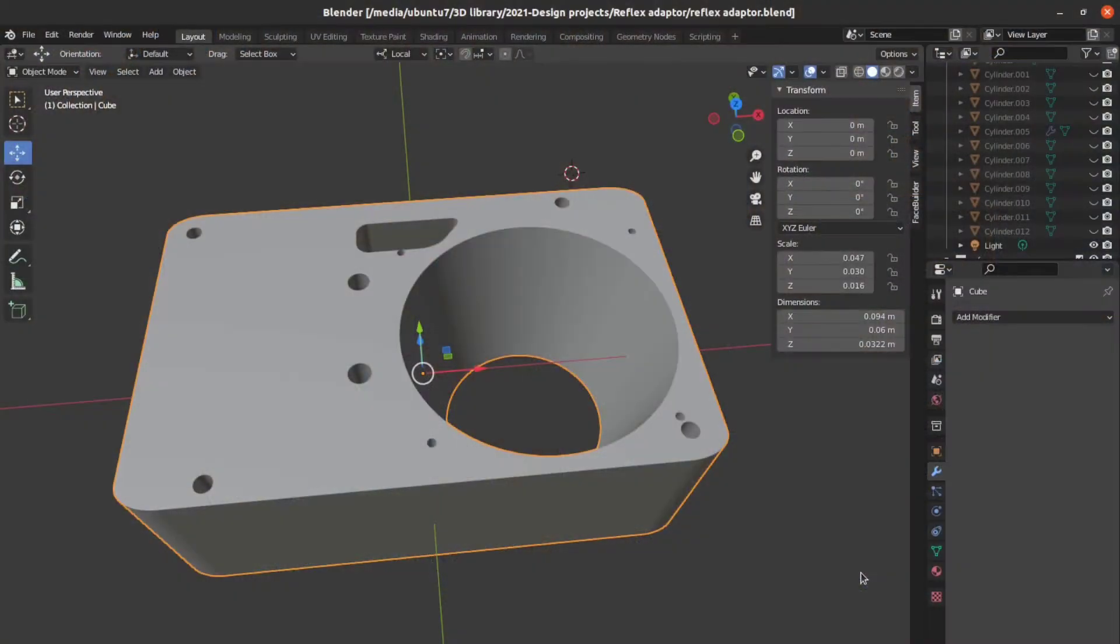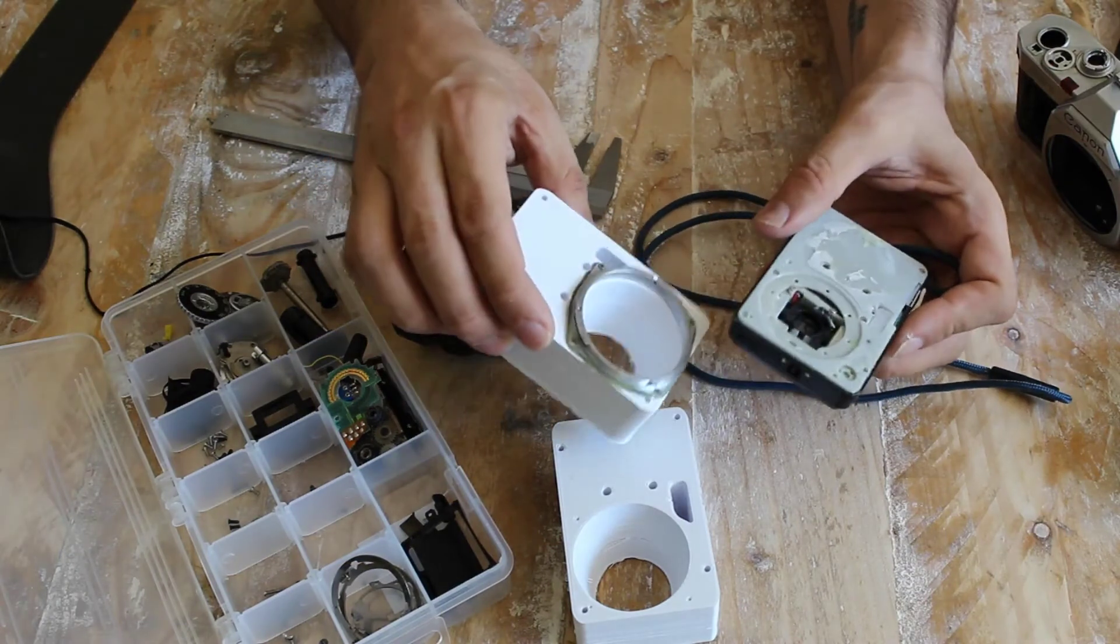Then I modeled and 3D printed a part that could act as a chamber and attached the mount for the lenses.